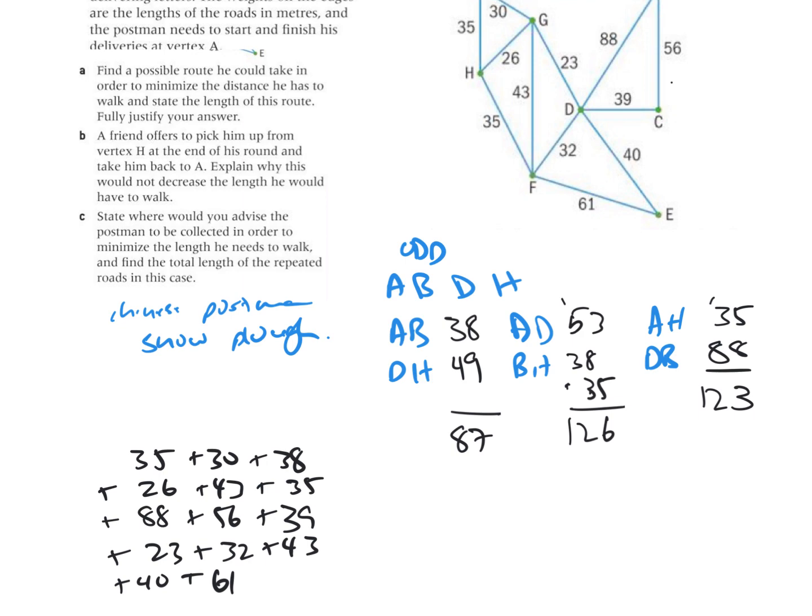I believe I got them all. If I look at the answer sheet I can see that this one here is going to be 546 plus the 87, should be in total 633, which is the minimum distance in total.